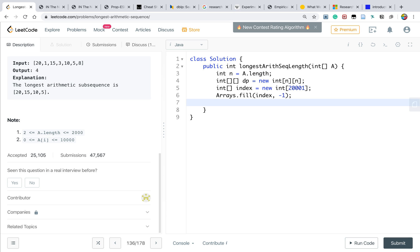So at first, all the elements are unavailable. Okay. Then we iterate the array. So j equal to i plus 1, j less than n, j plus plus. So we try to get the first element, which is a[i] times 2 minus a[j]. Okay.